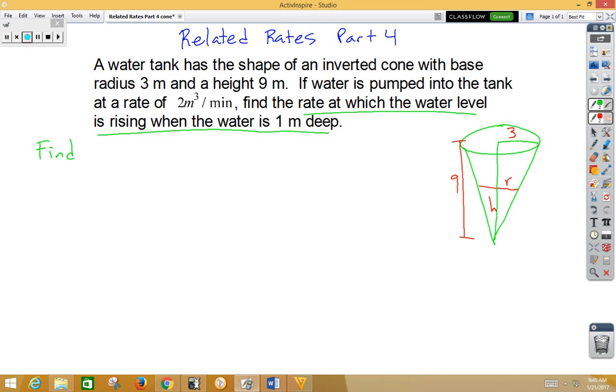So, what we're trying to find is dh/dt when h is 1. What we know, our known rate of change, is that the water is being pumped into the tank, so it's increasing, which makes it positive at 2 cubic meters per minute. So, dV/dt is going to be 2 cubic meters per minute.